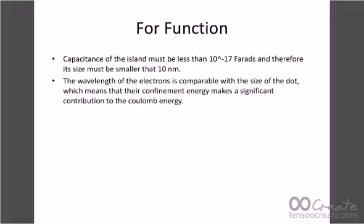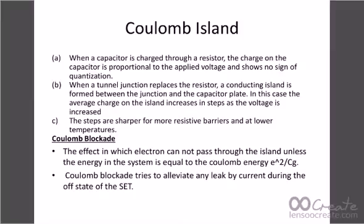For functioning of SET, the capacitance of the island must be less than 10⁻¹⁷ farads, and therefore its size must be smaller than 10 nanometers. The wavelength of the electrons is comparable with the size of the dot, meaning the confinement energy makes a significant contribution to the Coulomb energy. When a capacitor is charged through a resistor, the charge is proportional to the applied voltage with no quantization. But in a tunnel junction, a conducting island placed between the junction and the capacitor plate causes the average charge on the island to increase in steps as voltage increases, due to the quantized energy levels of electrons. The steps are sharper for more resistive barriers and at lower temperatures.